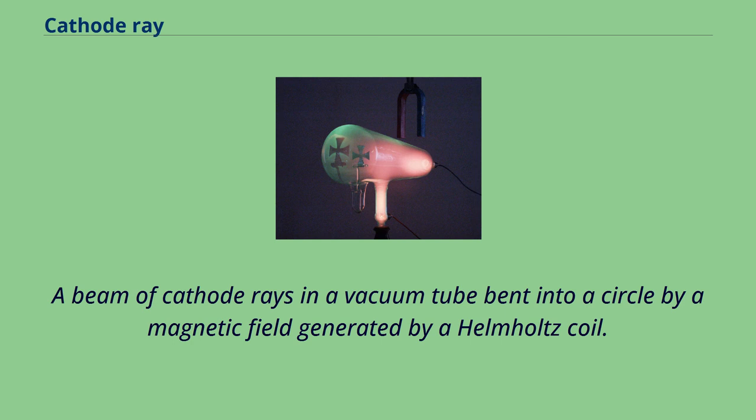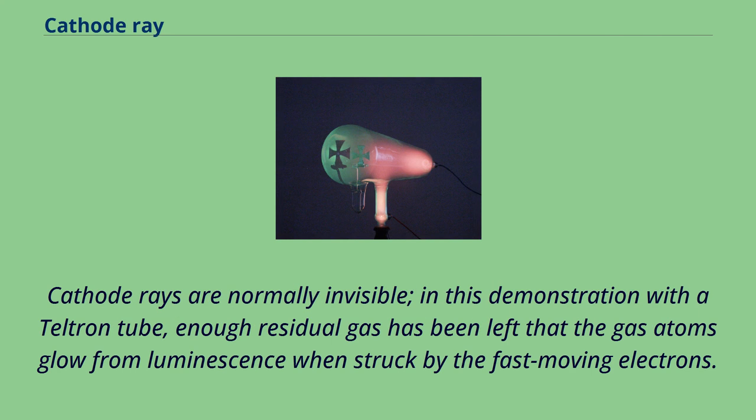A beam of cathode rays in a vacuum tube bends into a circle by a magnetic field generated by a Helmholtz coil. Cathode rays are normally invisible. In this demonstration with a teltron tube, enough residual gas has been left that the gas atoms glow from luminescence when struck by the fast-moving electrons.